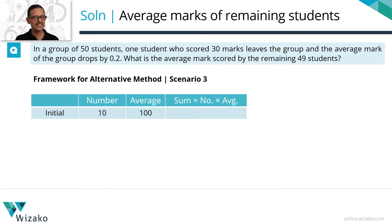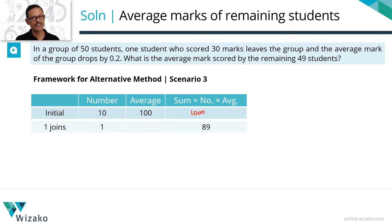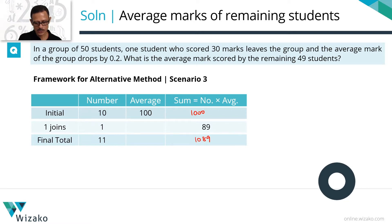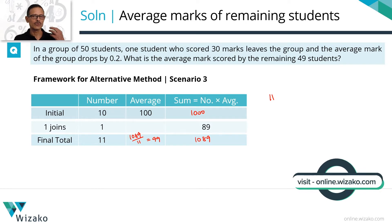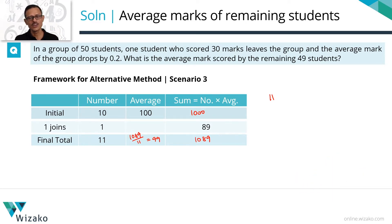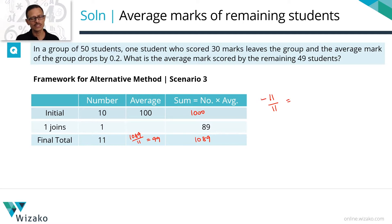Scenario three: the new person brings in less than the average. Initially 10 people, average $100, sum $1,000. The new person brings in $89. New sum is $1,089 with 11 people, giving an average of $99. This person brought in $11 less than the average. Spread across 11 people, each person's share goes down by $1. So the average drops by 1.